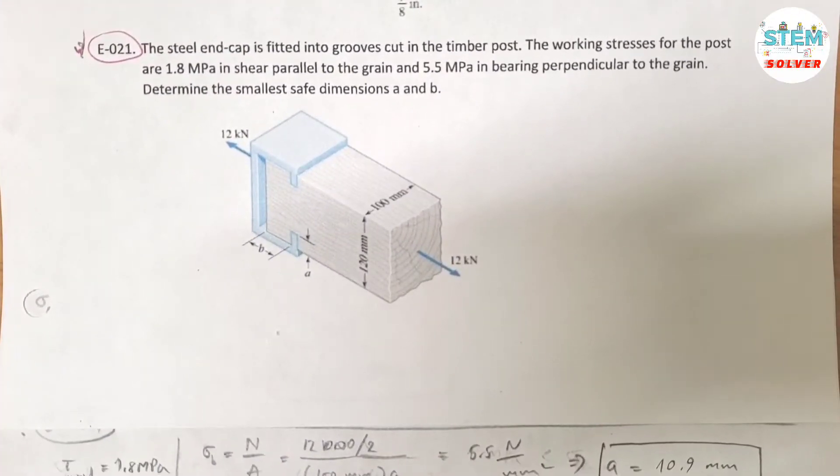The steel end cap is fitted into grooves cut in the timber post. The working stresses for the post are 1.8 MPa in shear parallel to the grain and 5.5 MPa in bearing perpendicular to the grain. Determine the smallest safe dimensions A and B.